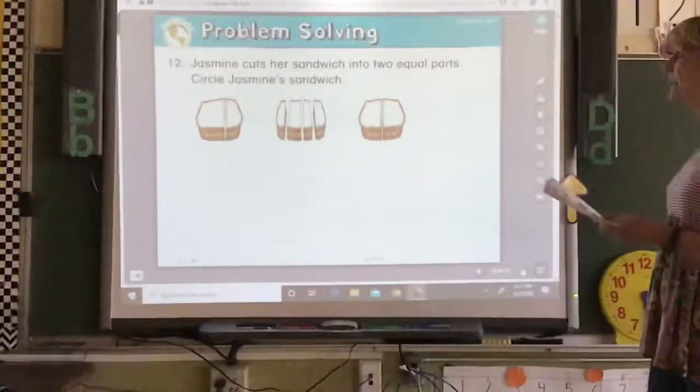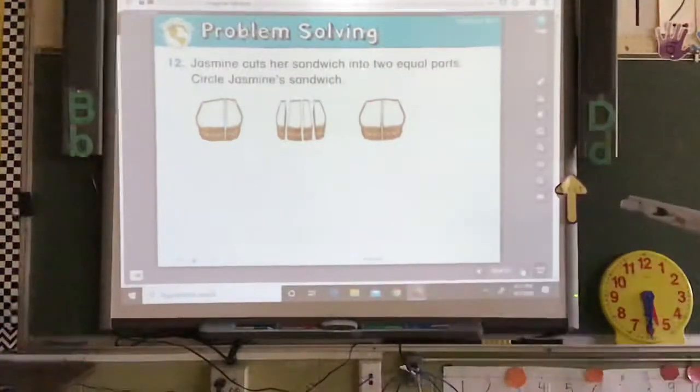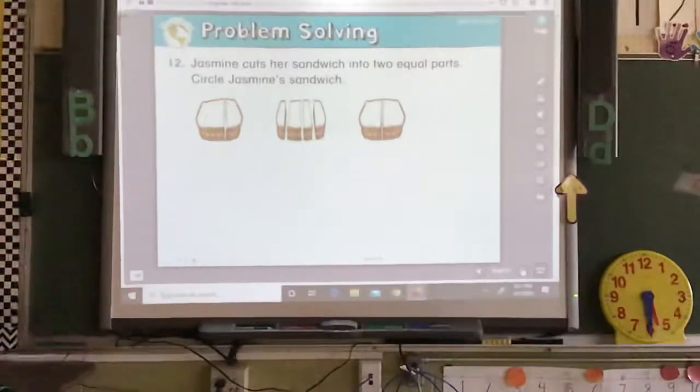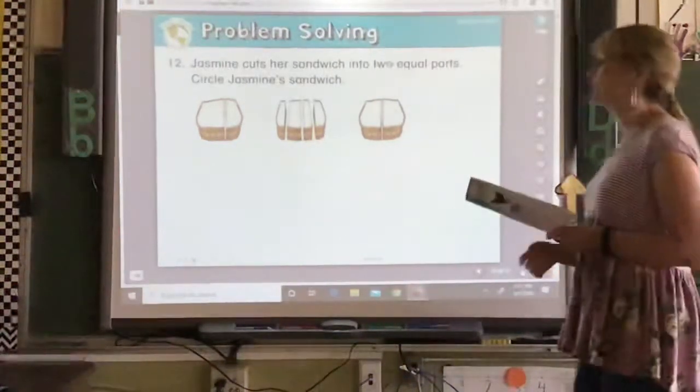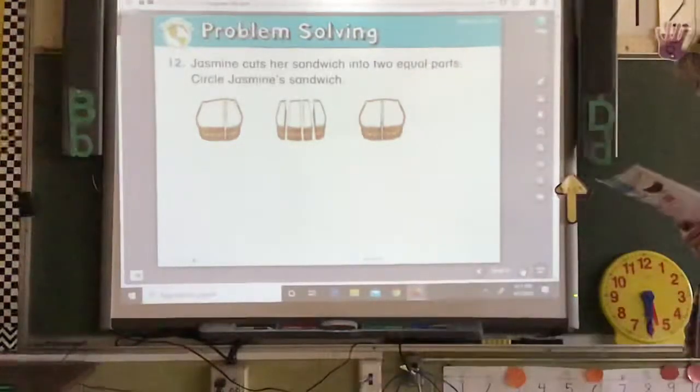Make sure this is the same. It says, Jasmine cuts her sandwich into two equal parts. Circle Jasmine's sandwich. So find the line that's divided into two equal parts and circle it.